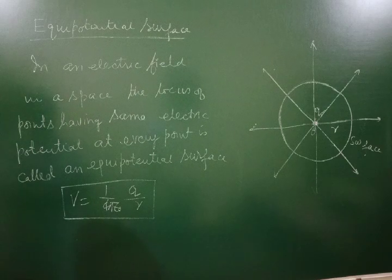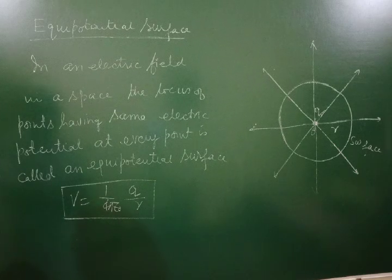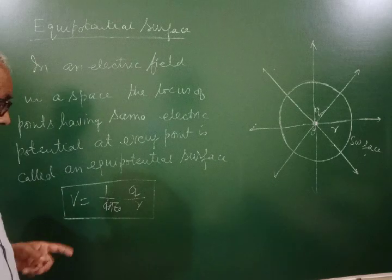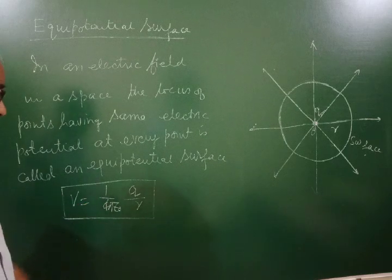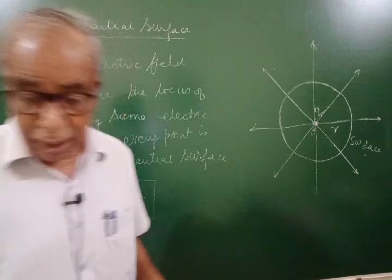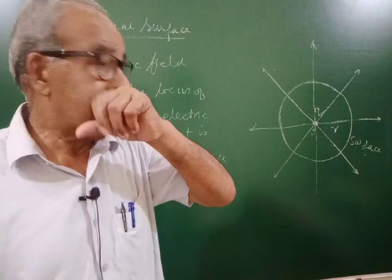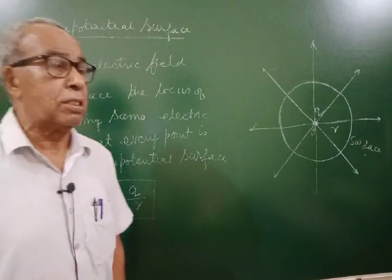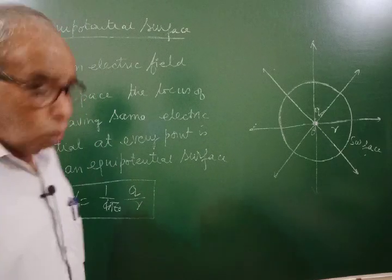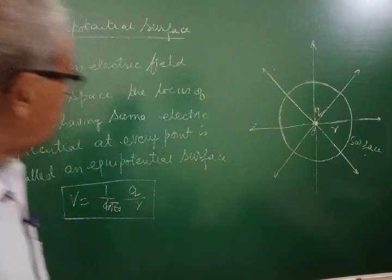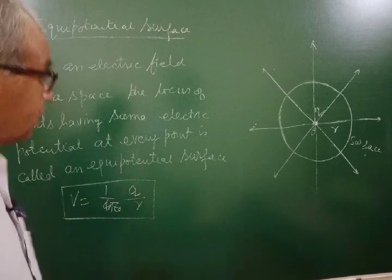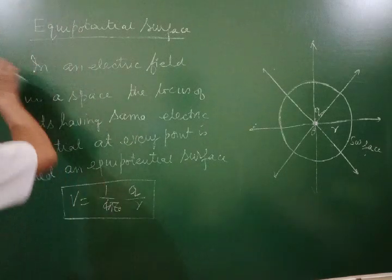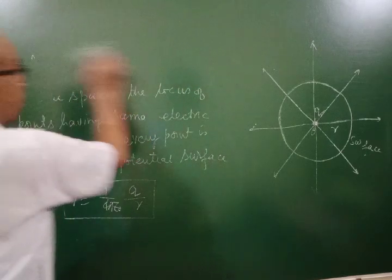The locus of points in space having the same electric potential at every point is an equipotential surface. For a point charge q, the potential at distance r is given by v equal to one upon four pi epsilon zero times q by r. So all concentric spheres having their center at the given point charge represent equipotential surfaces.